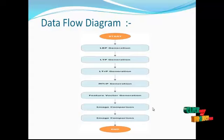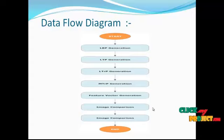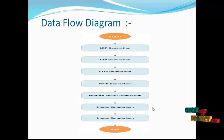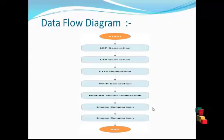After acquiring the feature vector of the image, we need to compare the input image as well as every image in the database. For every image in the database, the overall process will be carried out again. After that, based on the feature vector of the input image as well as the feature vector of the image present in the database, we can do the comparison. After the comparison, we can retrieve the most accurate as well as the most similar image from the database.